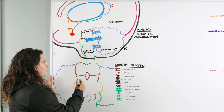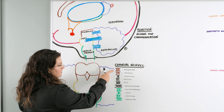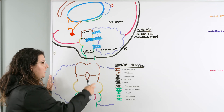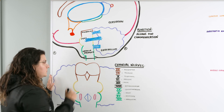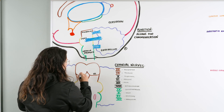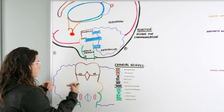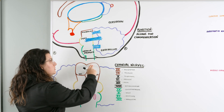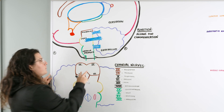Within the midbrain, we have two cranial nerves: three and four — oculomotor and trochlear. They exit the brainstem through the midbrain. The oculomotor nerve exits anteriorly, while the trochlear nerve actually exits posteriorly and wraps around.